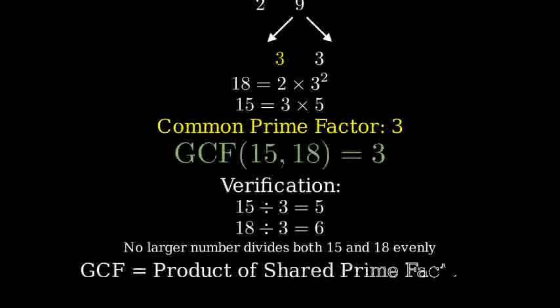And that's how we find the greatest common factor of 15 and 18 using prime factorization. Remember, the GCF is the product of all the shared prime factors.